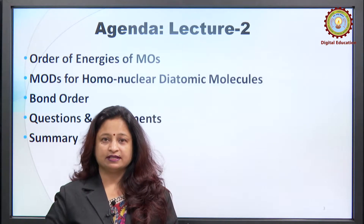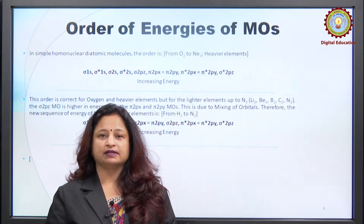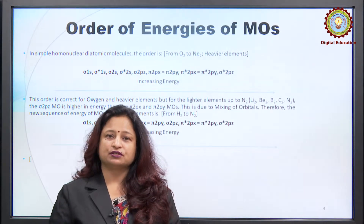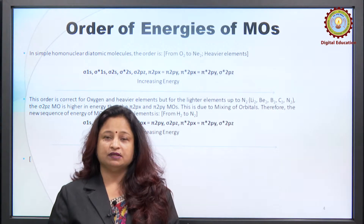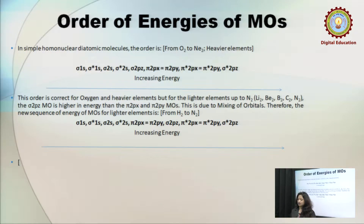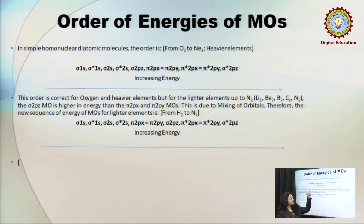Let us start with the order of energies of molecular orbitals. In the first session you understood how atomic orbitals overlap and how bonding and anti-bonding molecular orbitals are formed. On that basis we can understand the order of energies of these molecular orbitals. In this diagram you can very easily see that in case of simple homonuclear diatomic molecules, the order shown is specifically for heavier elements.